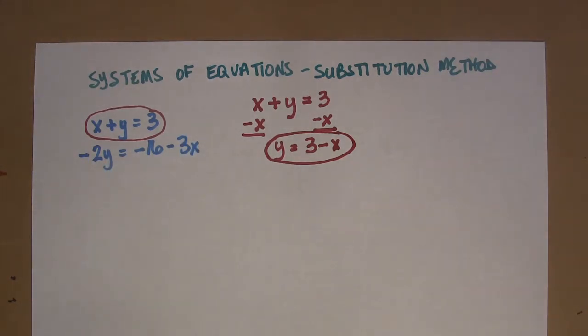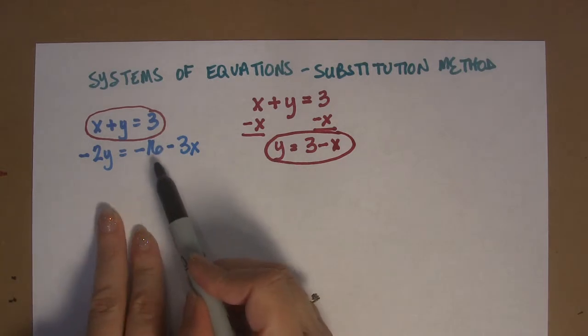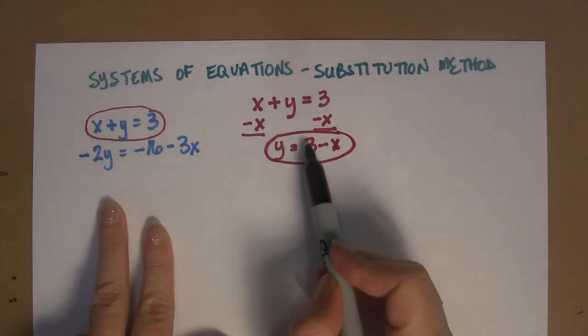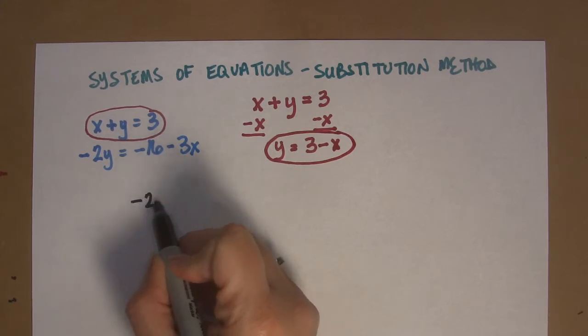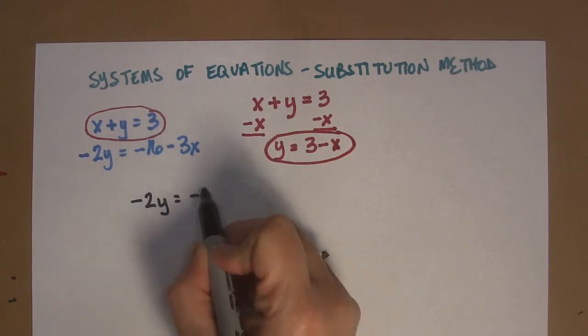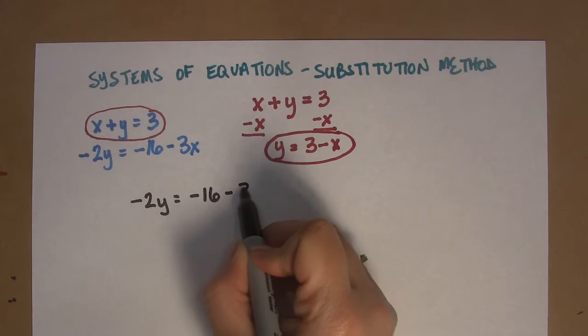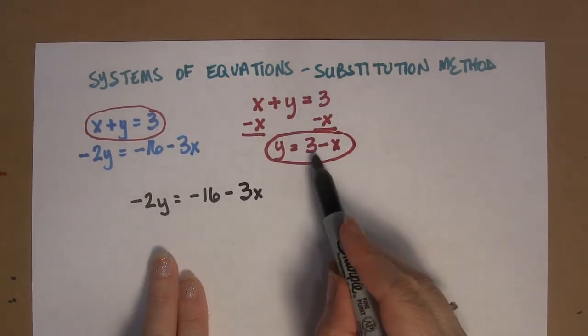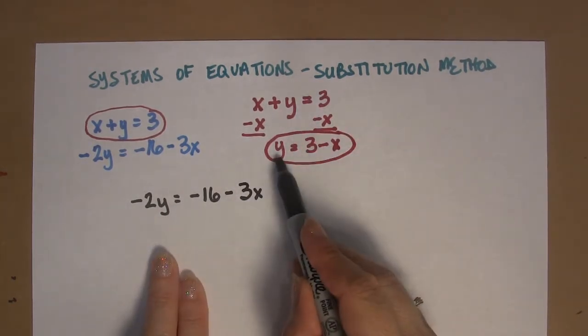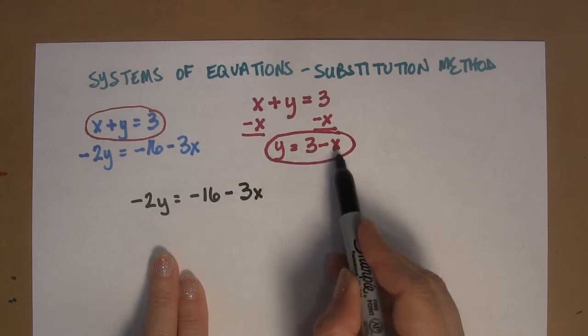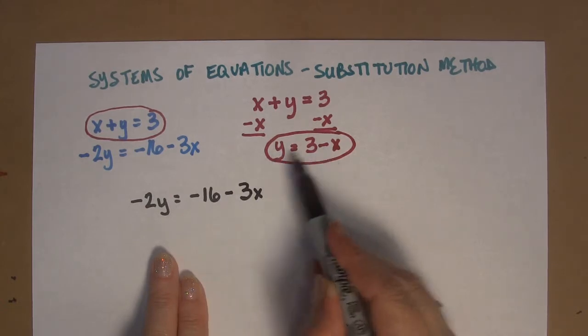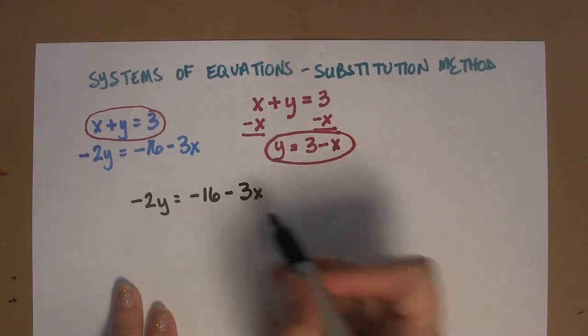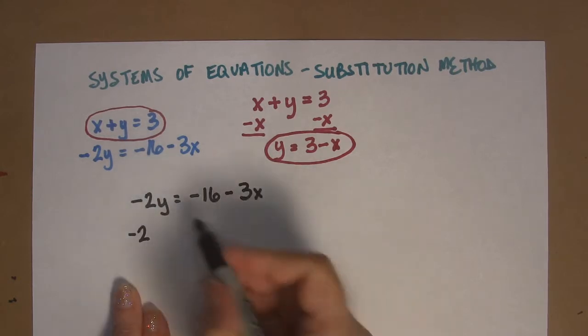Once I have done that, then what I do is I go to the other equation. Not the one I just picked here. The other one. And I rewrite it. Negative 2y equals negative 16 minus 3x. But this time, every time I see y, instead of writing y, I'm going to write 3 minus x. Why? Well, because I can. Y equals 3 minus x. So I could write 3 minus x if I want to. And guess what? I want to.